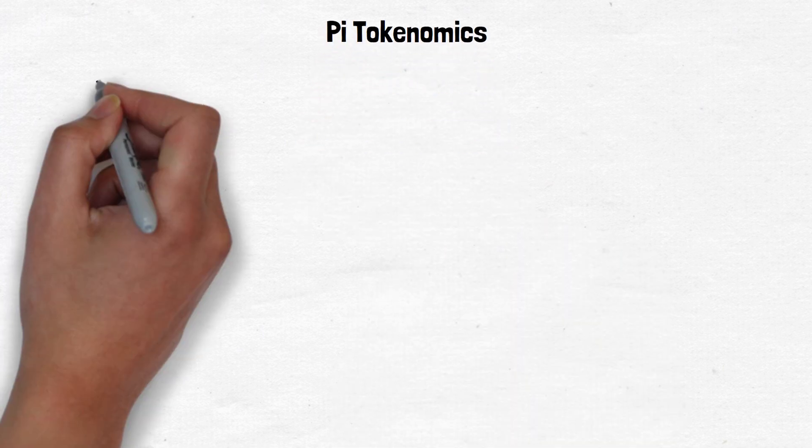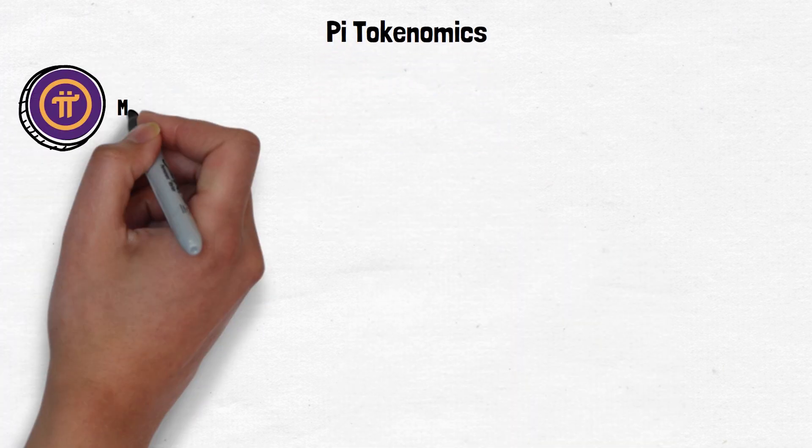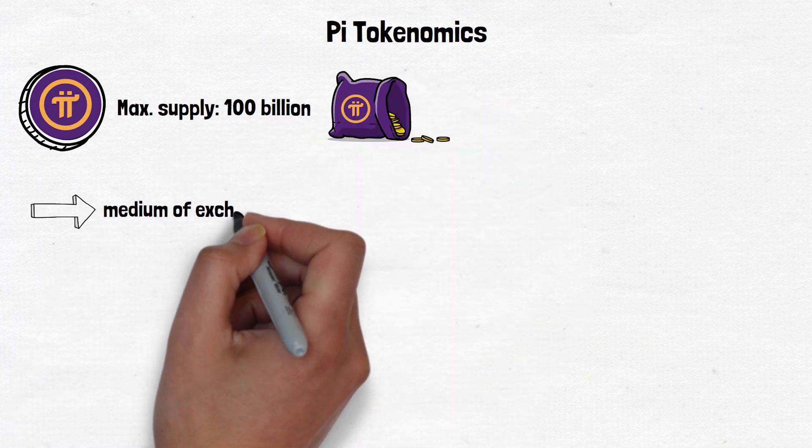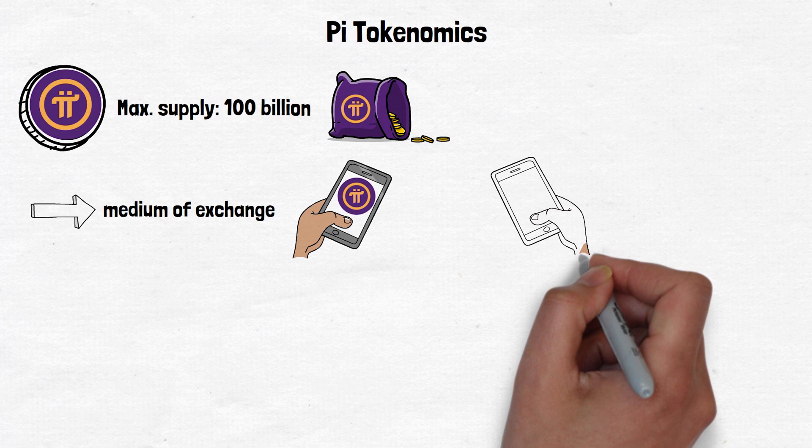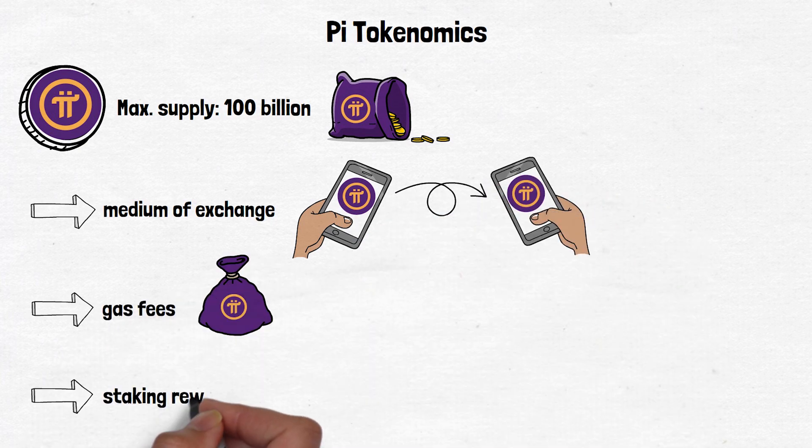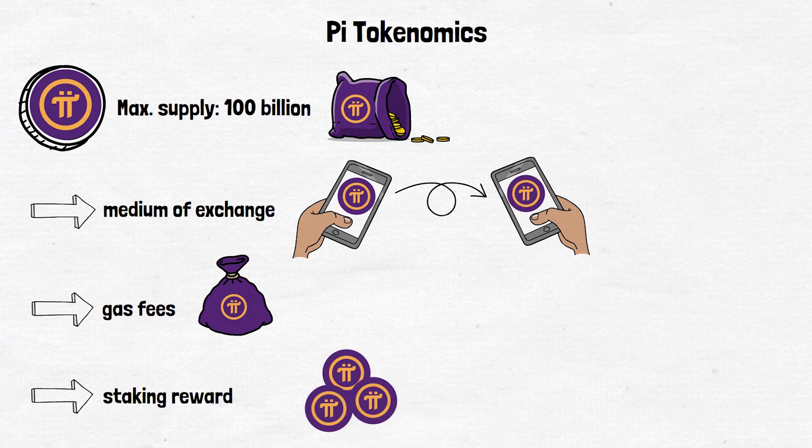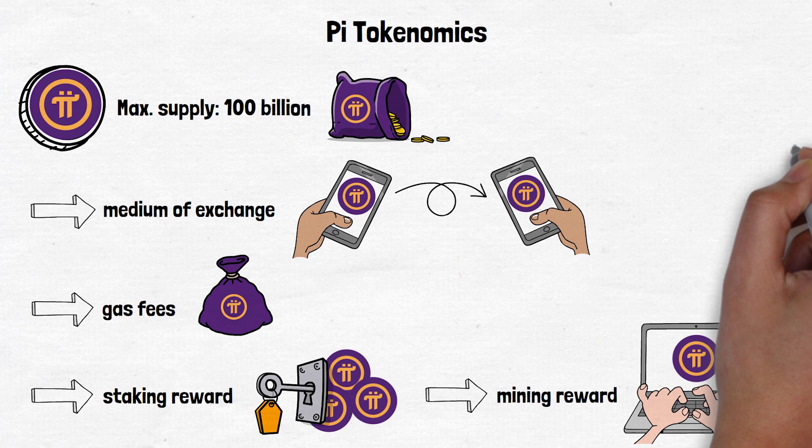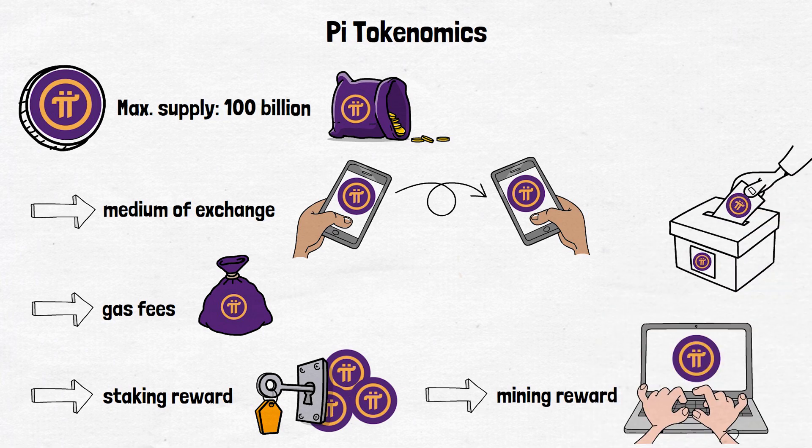Pi is the native cryptocurrency of the ecosystem, with a maximum supply set at 100 billion tokens. It serves as a medium of exchange for peer-to-peer transactions, can be used to pay for gas fees on the network, and offers staking incentives through the lock-up reward system where users lock their Pi tokens for higher mining rates. It also acts as a mining reward for securing and growing the network. However, Pi does not currently have a formal governance structure, so it cannot be used for voting or influencing how the network operates.